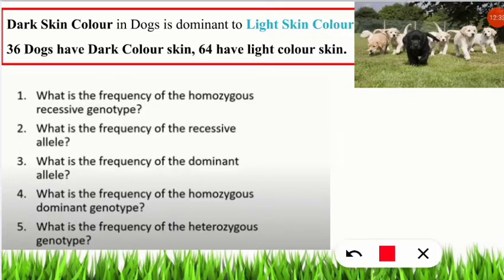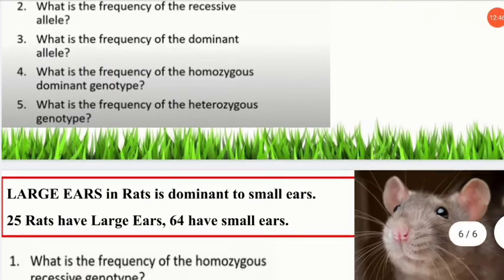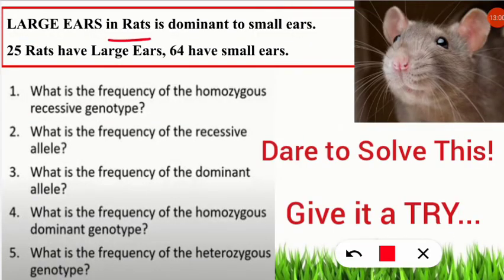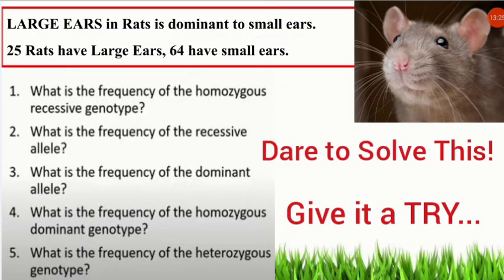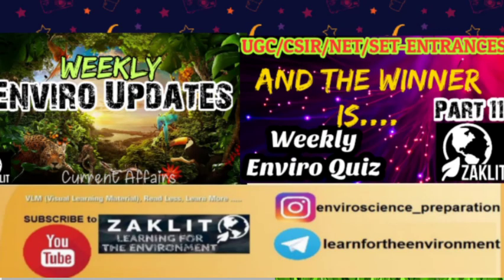Here is a practice question for you: large ears in rats is dominant to small ears. Given that 25 rats have large ears and 64 have small ears, find the five answers as we just solved. Comment your answers in the comment section — those who watched attentively should be able to solve it within two minutes. If you liked this video, give it a like and subscribe to the channel for further updates on GATE and NET examinations.